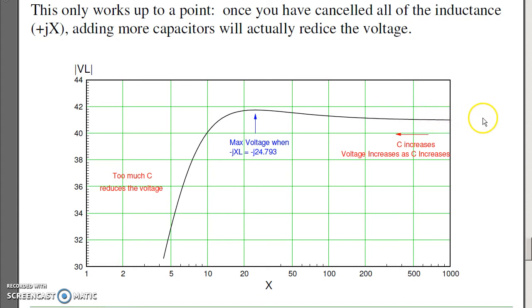The impedance of the capacitor is 1 over j omega C. So when C equals 0, the impedance is infinity. As I increase the capacitance, the voltage actually does go up slightly. It's a maximum when the capacitor cancels the reactance. Anything more than that actually makes things worse. So capacitors do add voltage on transmission lines. Not a lot, but a little bit.